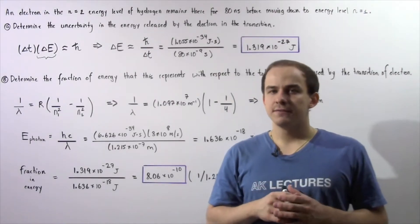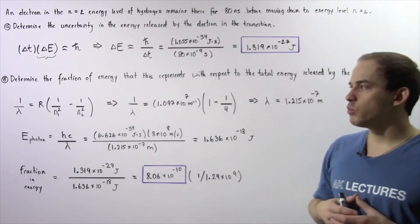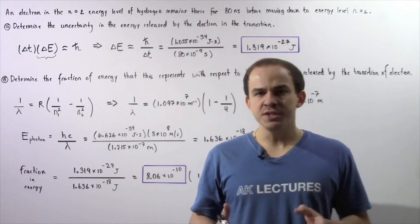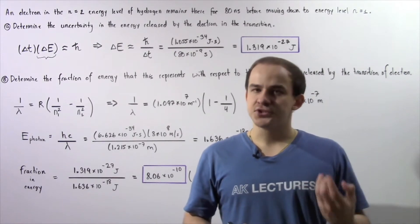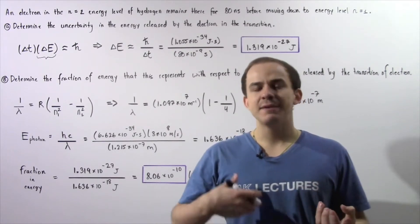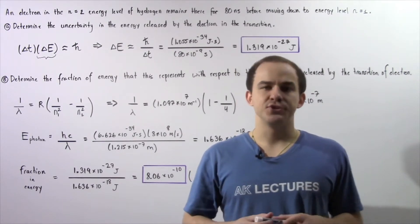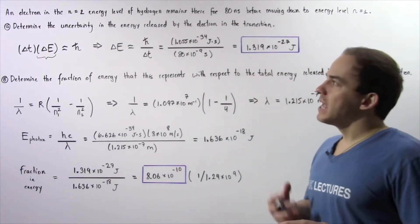Let us now look at the following example that deals with Heisenberg's uncertainty principle that relates the uncertainty in time and the uncertainty in energy. Let's begin.